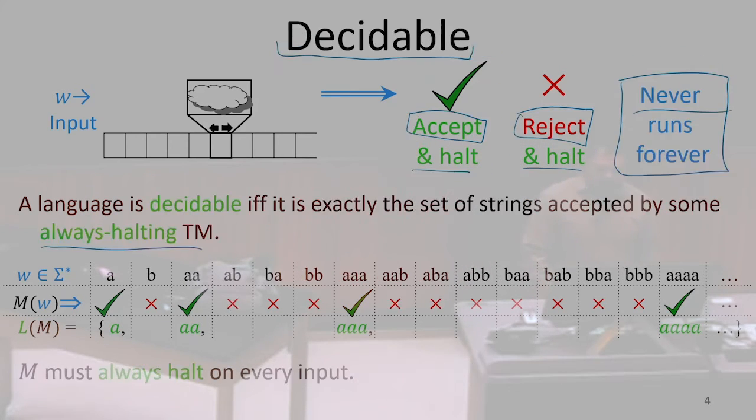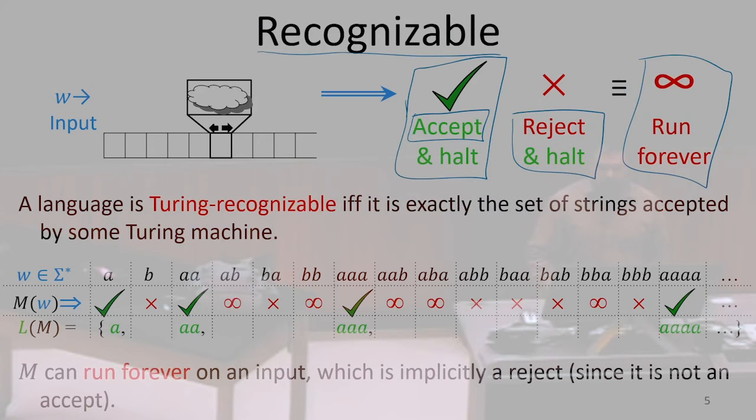So a language is decidable, provided there is an always halting Turing machine which accepts exactly all of the strings in that language. We say a language is recognizable, provided there is a Turing machine which accepts all of the strings that are in that language. And for strings that are not in the language, it's either going to explicitly reject them and halt, or else it's going to run forever, which we're going to sort of say is like an implicit rejection.